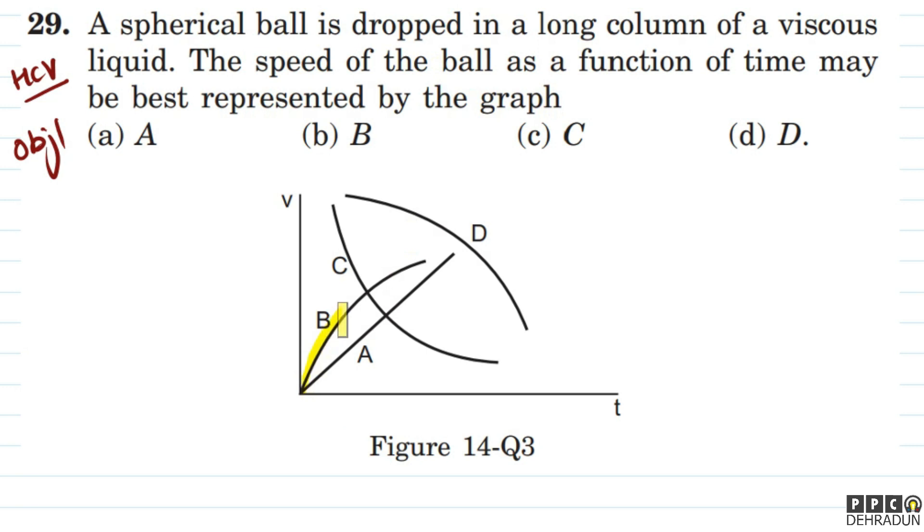The answer is option number B. If you have a ball dropped, you can see it reaches a particular velocity. In this case, the speed curve will be shown in the graph.